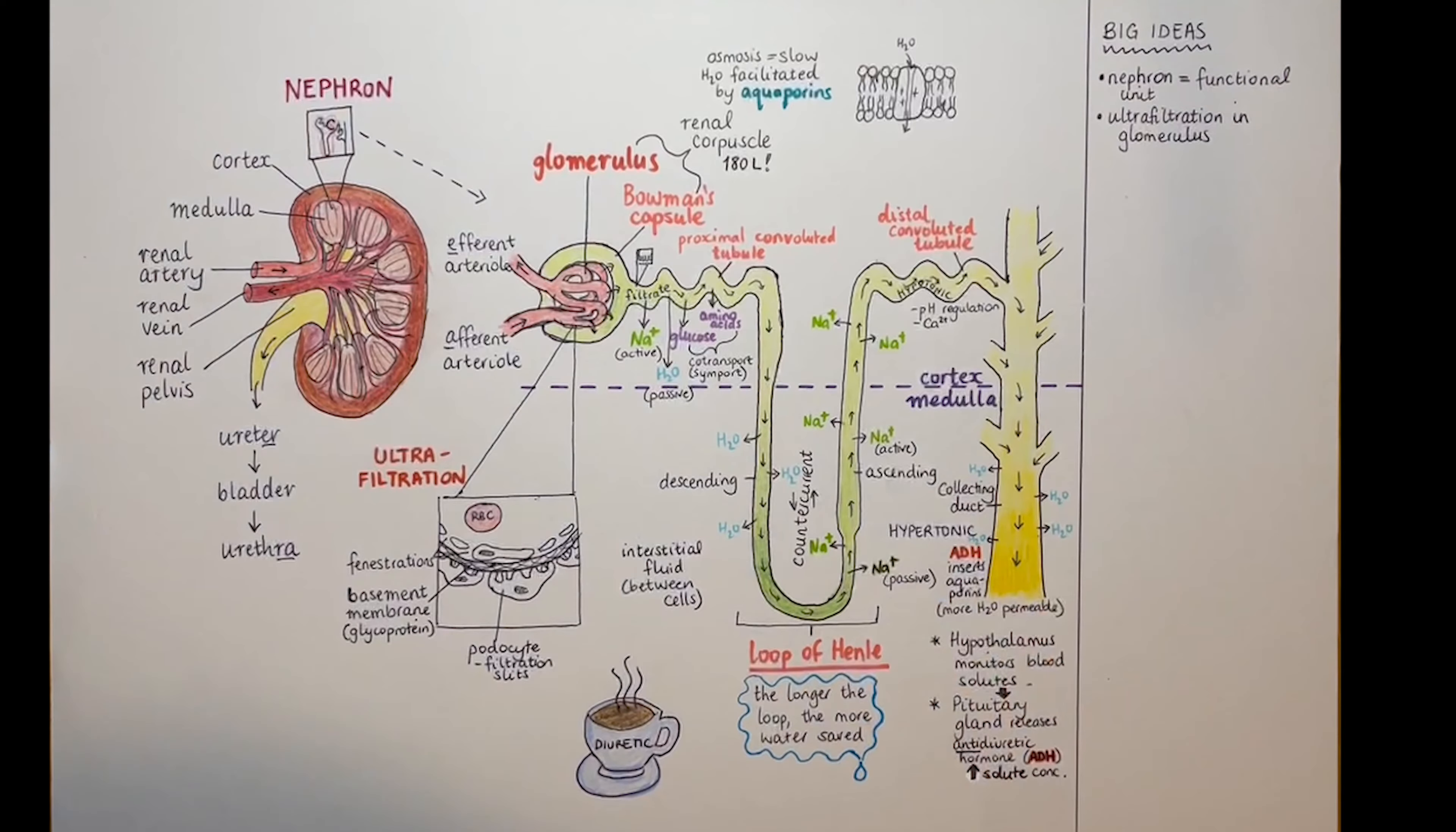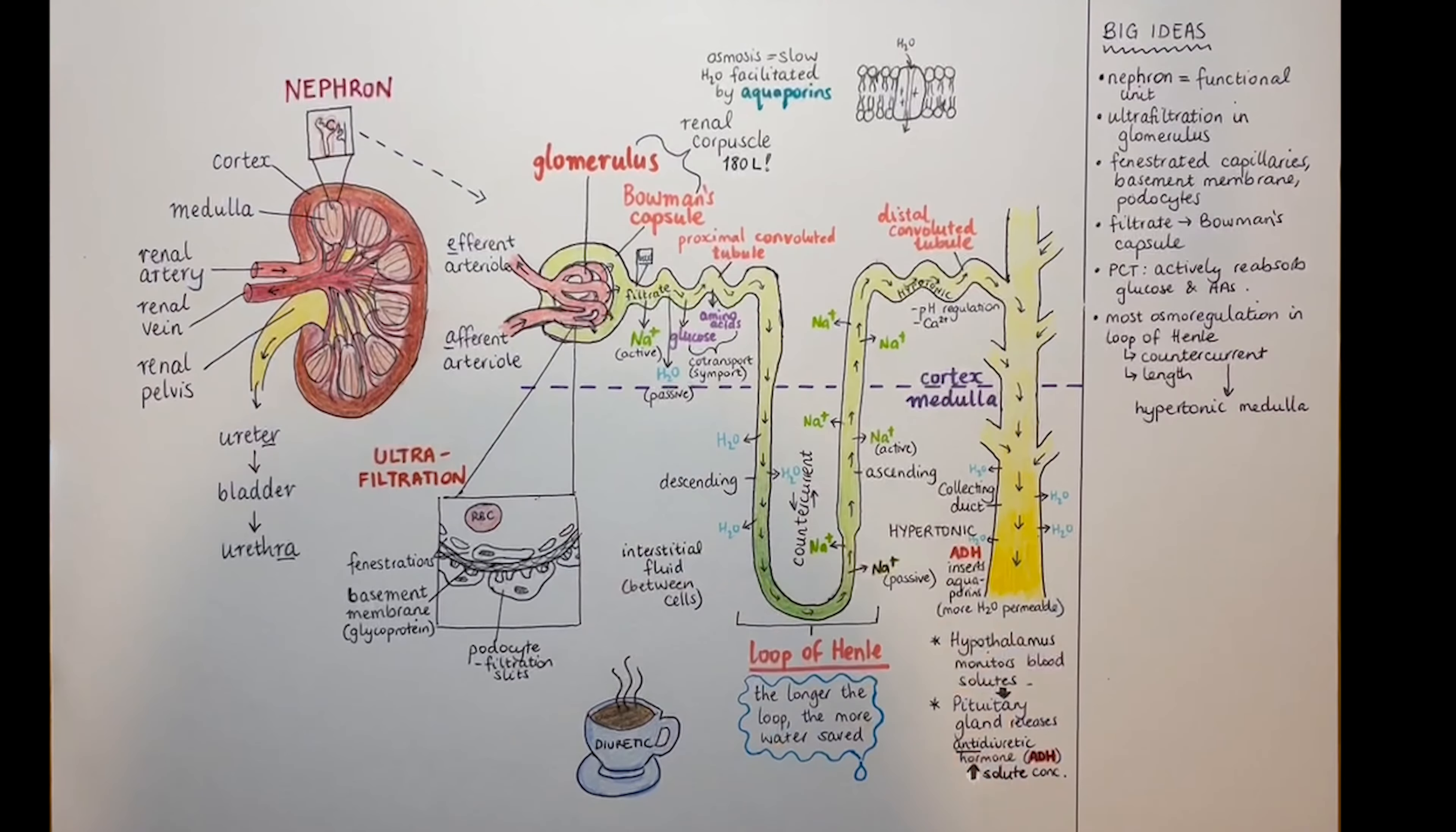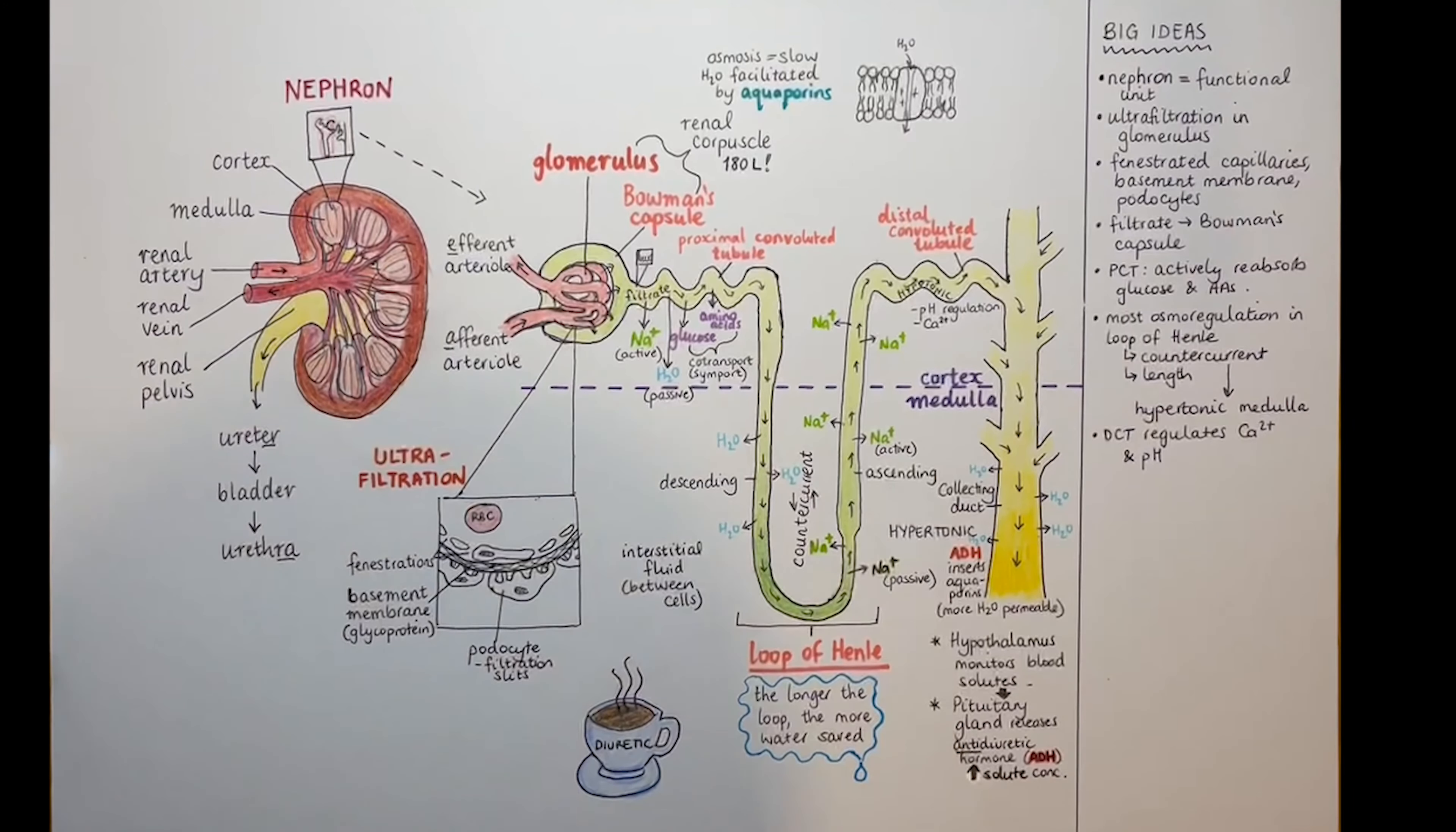Ultrafiltration takes place in the glomerulus. It's made possible by fenestrations in the capillaries, a mesh-like basement membrane, and podocytes. The filtrate gets collected in the Bowman's capsule. Glucose and amino acids are actively reabsorbed from the filtrate in the proximal convoluted tubule, PCT for short. Most osmoregulation takes place in the loop of Henle, or at least that then sets up the conditions for the subsequent effects on the collecting duct. And that's due to the counter-current that keeps the medulla hypertonic, or that makes this region down here very salty.